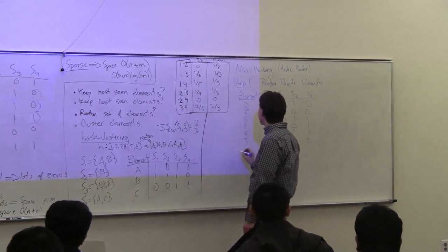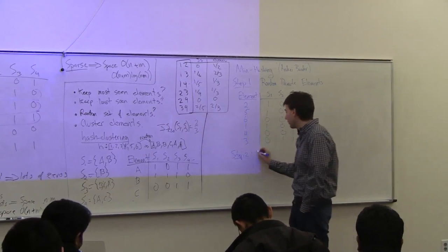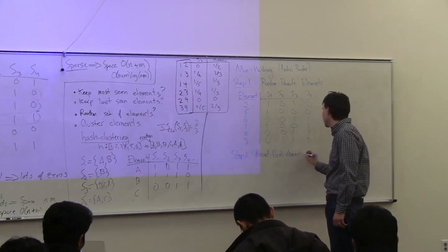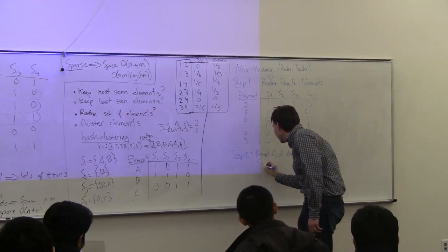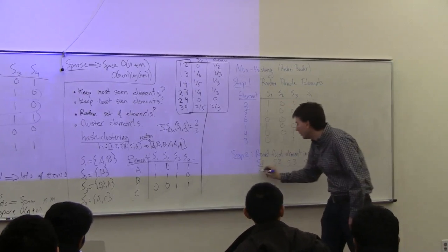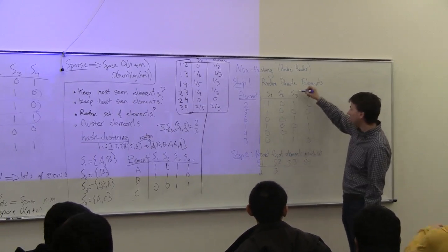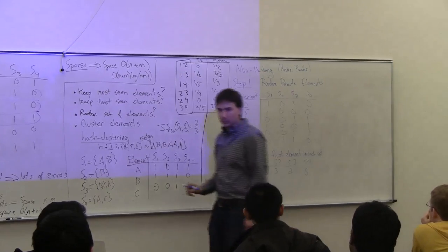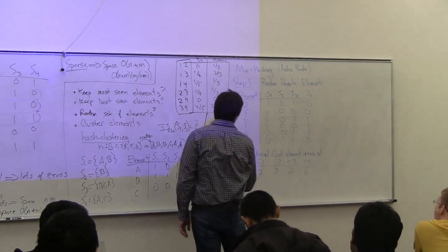That was the first step. Step two is to record the first element in each set. So for set one, set two, set three, set four — after I've done the random ordering, the first element in set one is two, the first in set two is three, the first in set three is two, and the first in set four is six. We'll call this function m, based on this random permutation.